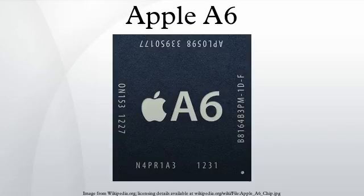The A6 includes an upgraded image signal processor that, compared to the ISP in the A5, improves the speed of image capture, low-light performance, noise reduction, and video stabilization. The A6 is manufactured by Samsung on a high-K metal gate 32 nm process.